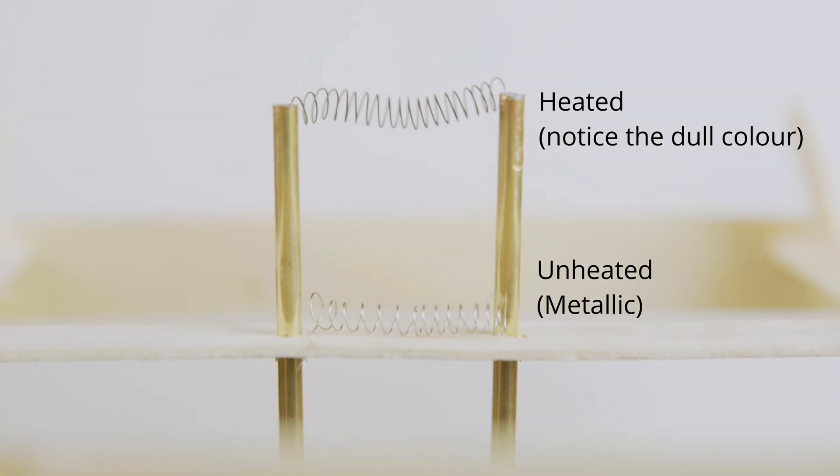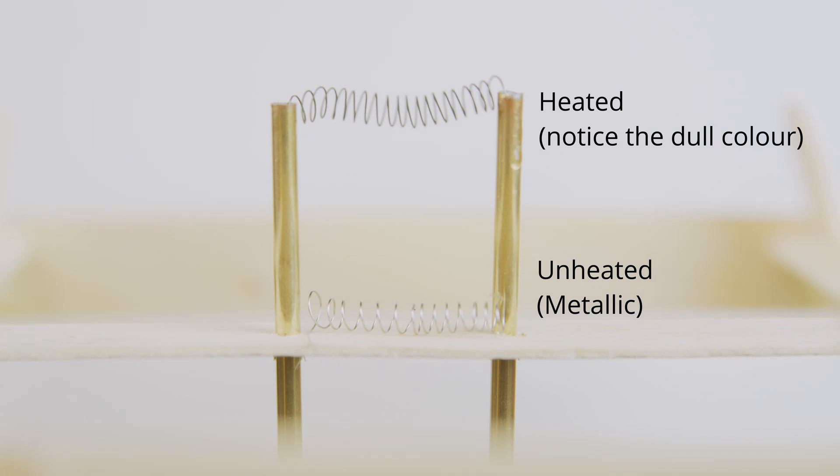When nichrome is heated to red hot, a layer of chromium oxide forms on its surface. This layer protects the rest of the material from further oxidation. In fact, you can find nichrome wires in many home appliances like hairdryers and toasters.